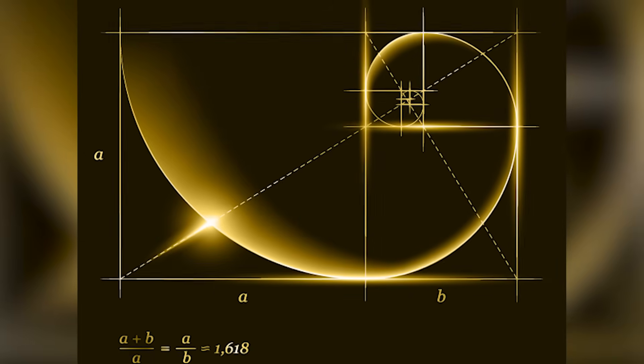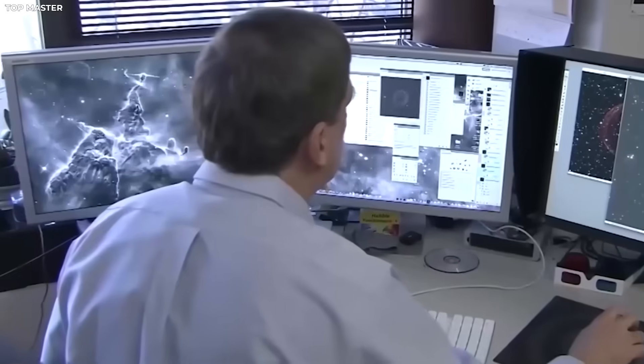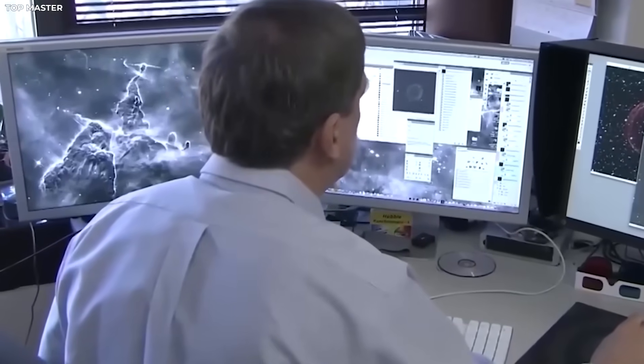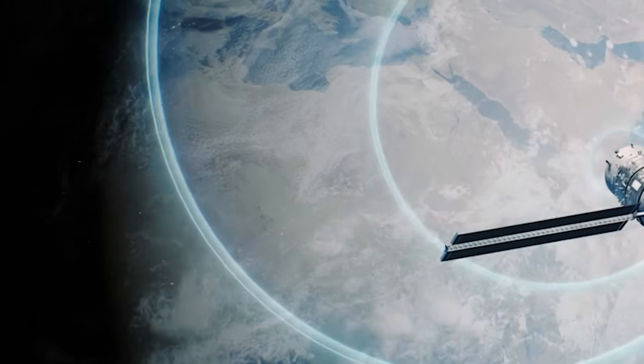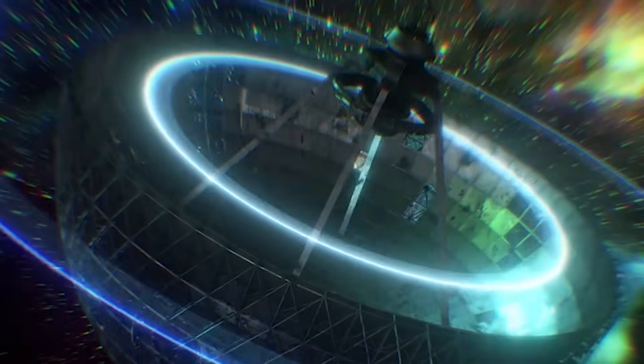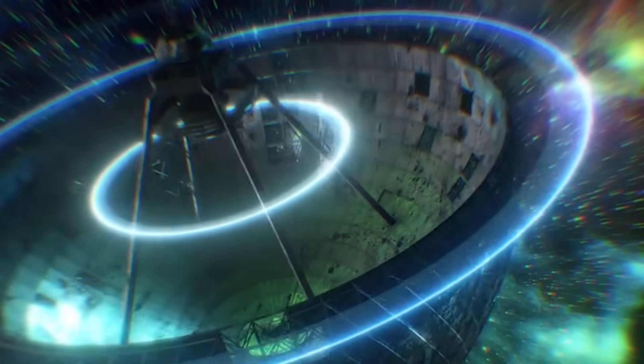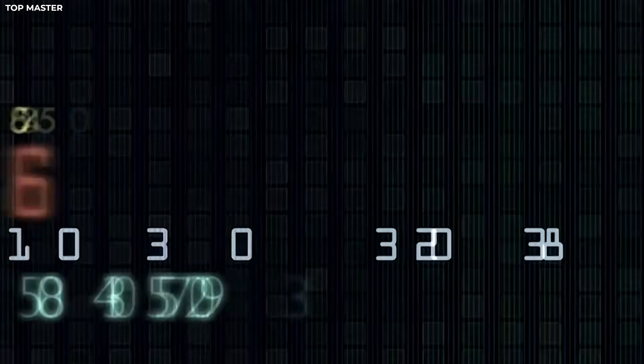It repeated in ways that matched known mathematical patterns, like pi or the golden ratio. These patterns go beyond looking nice on paper. They show up in nature, in galaxies, and even in our DNA. The signal came in bursts, hours apart. And with each burst, it seemed to grow more complex, like it was building up to something.